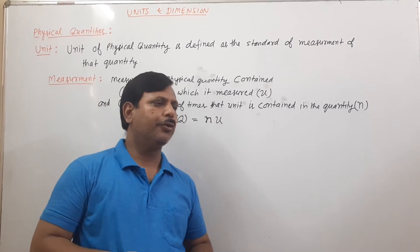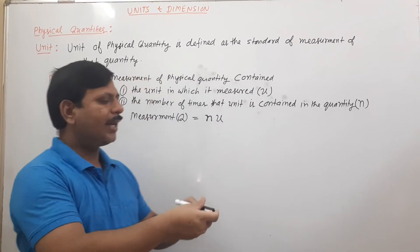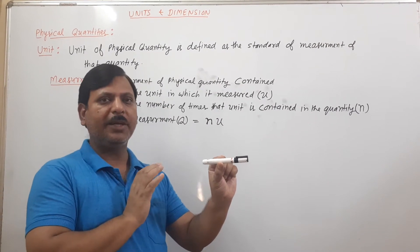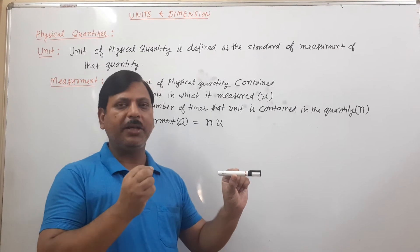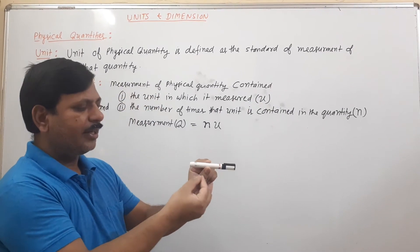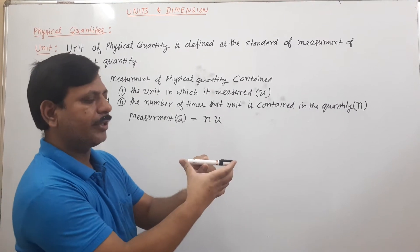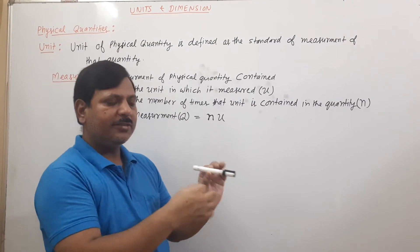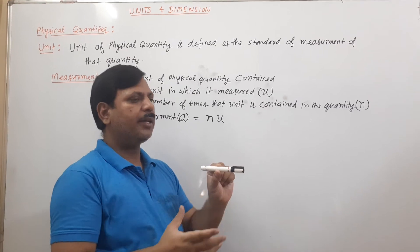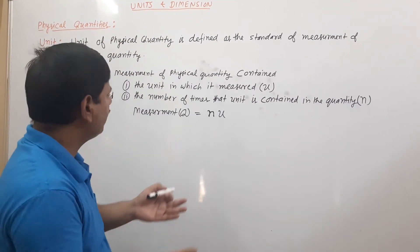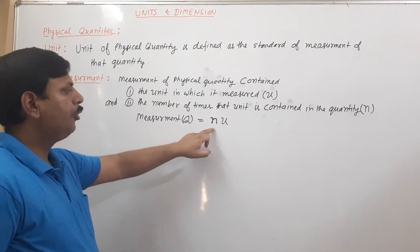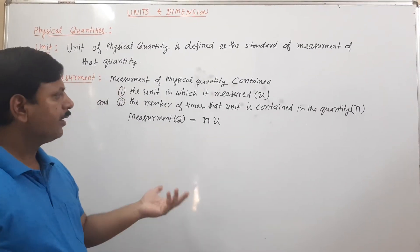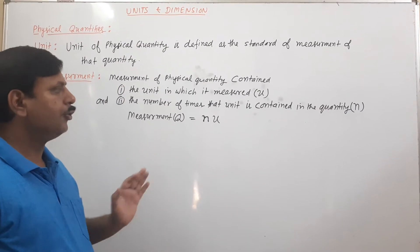For example, suppose I want to measure the length of this pen. I have taken the unit centimeter. If the pen contains 10 times of one centimeter, the numerical value is 10 and the unit is centimeter, so the measurement is 10 centimeters. Measurement contains two things: the numerical value and the unit.